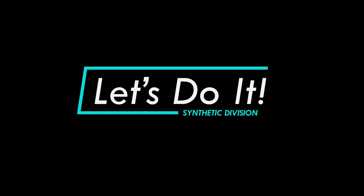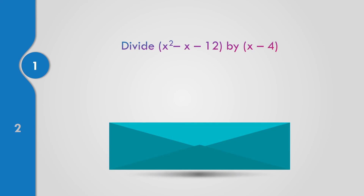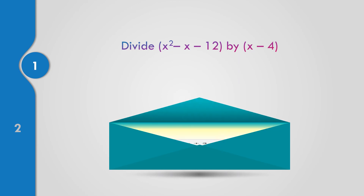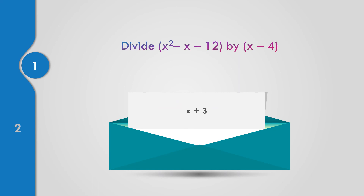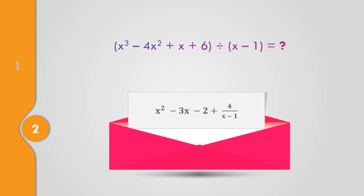Now let us apply what you have learned. Pause the video and try to solve on your own. First, divide x squared minus x minus 12 by x minus 4. The answer is x plus 3. Second, divide x cubed minus 4x squared plus x plus 6 by x minus 1. The answer is x squared minus 3x minus 2 plus 4 over x minus 1.